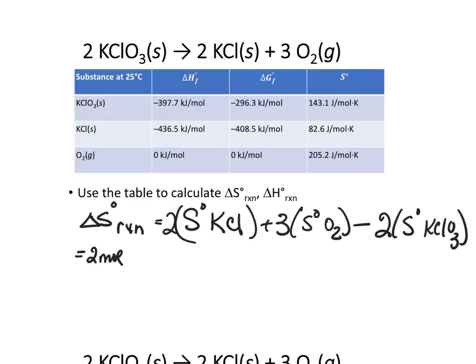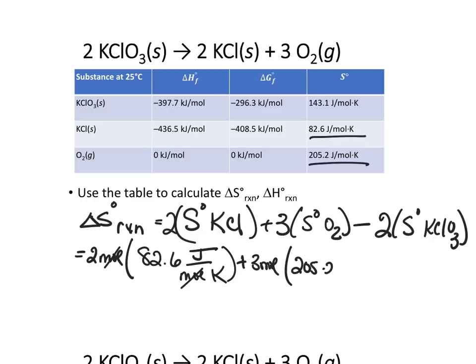We have 2 moles of KCl times the value of S for KCl, which is 82.6, and the units are joules per mole kelvin. This allows the moles to cancel, and we'll be left with joules per kelvin, plus 3 moles times the value for O2. It's not zero. Oxygen has got entropy, so it's 205.2 joules per mole kelvin,